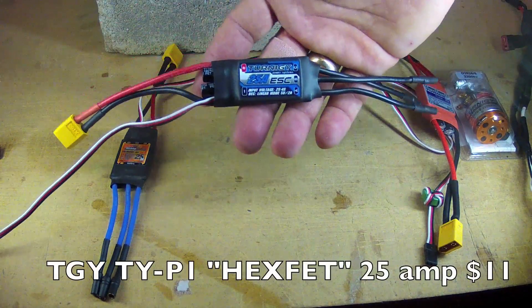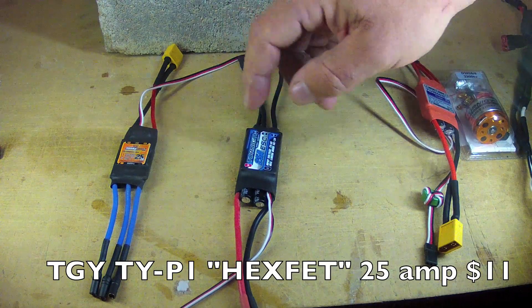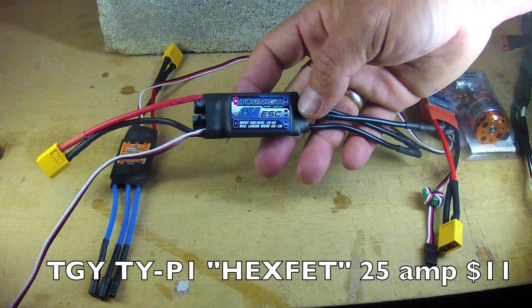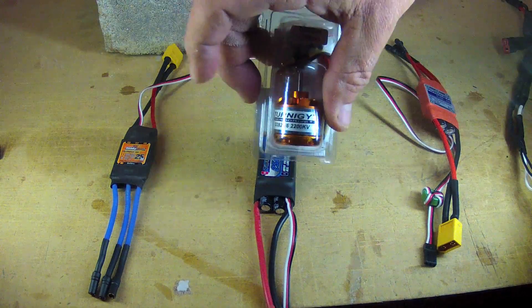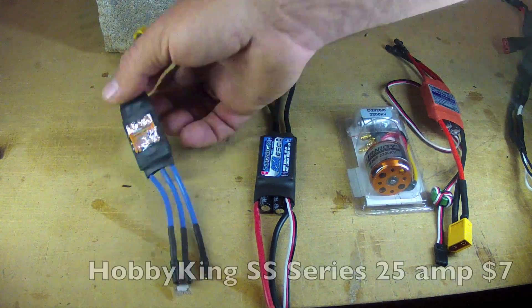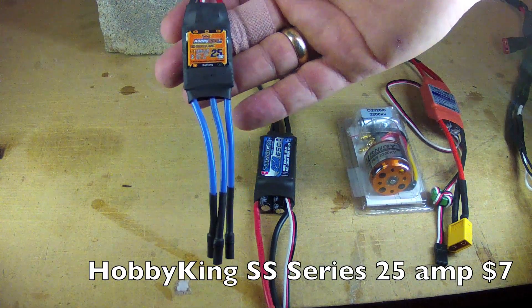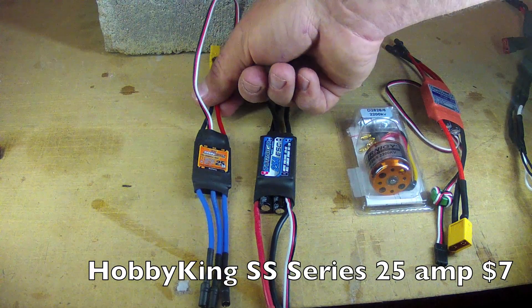The Turnigy Hexfet tested extremely well. It seems very robust. It has two capacitors. And this is only $11. This one probably gets my vote as being the better of the ESCs for this particular motor for most of its applications. But the Hobby King Super Simple 25 amp at only $7 did reasonably well. But I would only recommend this for modest power settings in lighter planes.